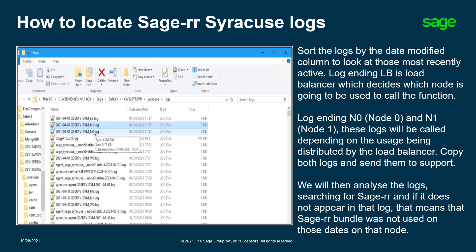Alternatively, you can determine this by running a simple search for Sage RR, and if it does not appear in the log then that would suggest that the Sage RR bundle was not used on those dates on that node. Similarly, you can search for HTTP reference in the logs.